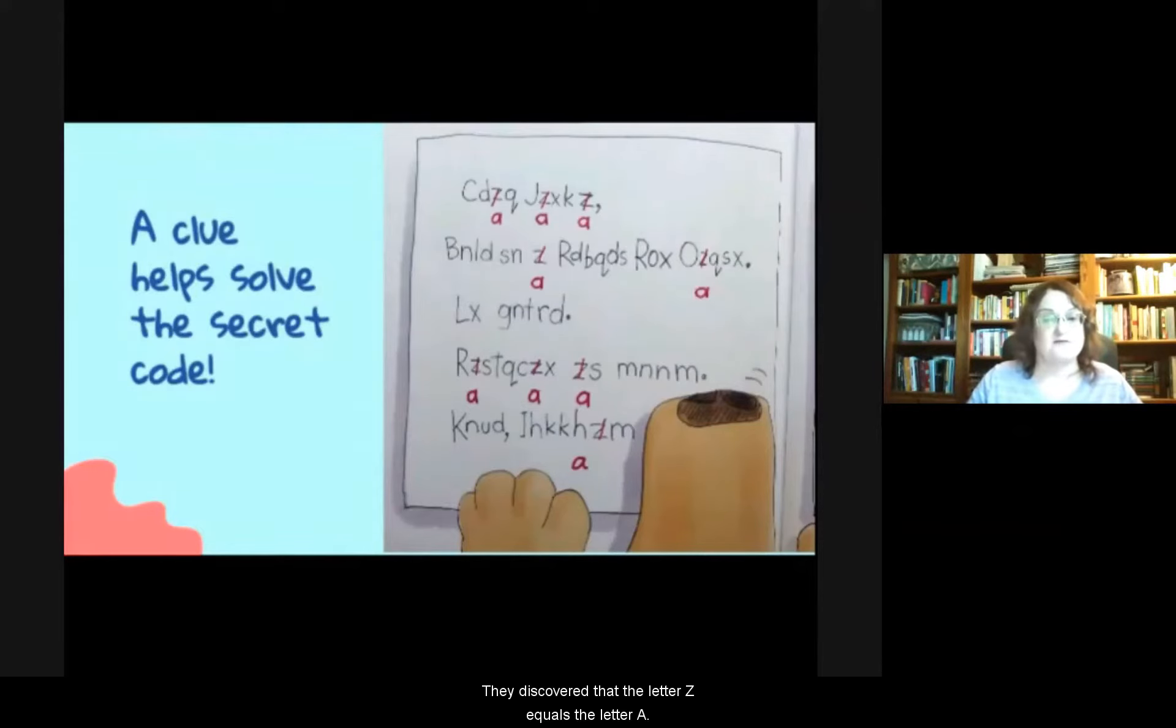Here's the clue King and Kayla need to solve the mystery. They discovered that the letter Z equals the letter A. So using this clue, Kayla, King, and one of their friends cross out each letter Z they see and replace them with the letter A.